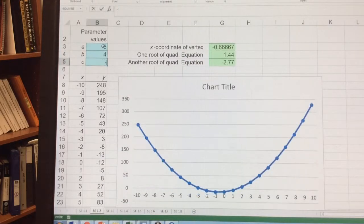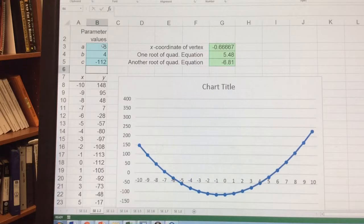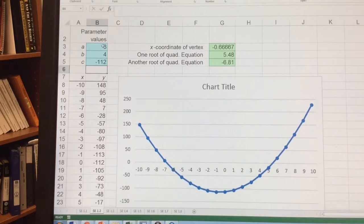So 3, 4, negative 112. And that there is what the graph looks like, and it tells me both my vertex and each unit root. This is a very important spreadsheet to save. So I encourage you to save it and be familiar with how to recreate it in Excel.